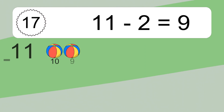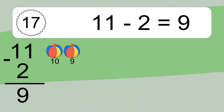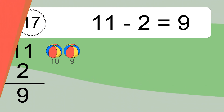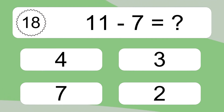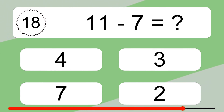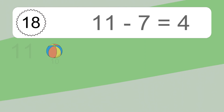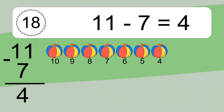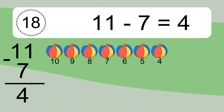11 minus 7 equals what? 11 minus 7 equals 4. Let's count it: 10, 9, 8, 7, 6, 5, 4.